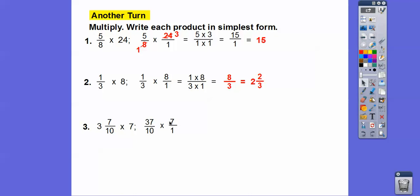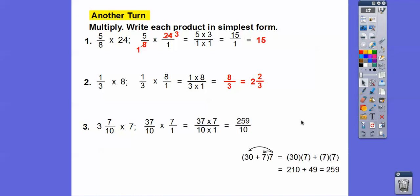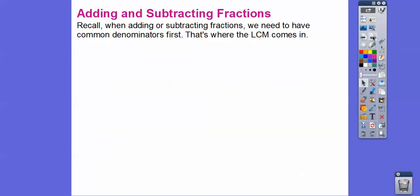For the next problem, nothing reduces so we multiply thirty-seven times seven. Using the distributive property: thirty-seven equals thirty plus seven, so seven times thirty is 210 and seven times seven is 49, giving 210 plus 49 equals 259. So the answer is 259 over 10, and since ten goes into 259 twenty-five times with nine left over, we get 25 and nine-tenths.